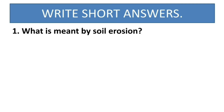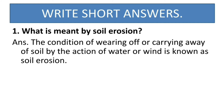Short answers. What is meant by soil erosion? The condition of wearing of or carrying away of soil by the action of water or wind is known as soil erosion. This carrying away of soil can be because of water — when there is a flood — or because of wind, when there is a cyclone.